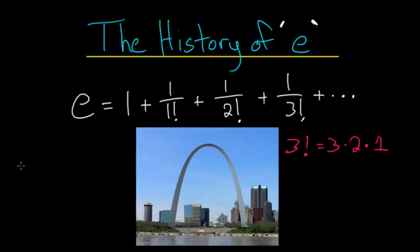And e, written as a decimal, is equal to 2.718281, and it goes on forever. e has an infinitely long decimal expansion, since it is an irrational number, like pi.